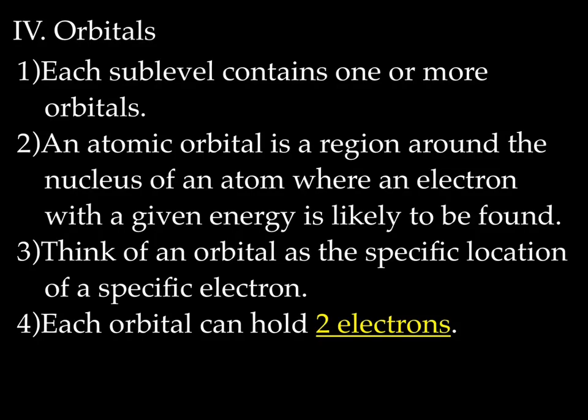There's a third level of organization in the electron cloud, and that is the orbitals. Each sublevel contains one or more orbitals. An atomic orbital is a region around the nucleus of an atom where an electron with a given energy level is likely to be found. Think of an orbital as a specific location for a specific electron, and each orbital can hold two electrons — and that's going to become very important soon. So there are three levels of organization: energy levels, sublevels, and the orbital — you can think of the orbital as the exact seat that the electron is in.